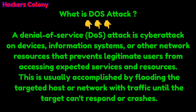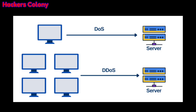DoS attack does the same thing on a targeted site — it floods with lots of traffic, the server gets crashed, and the site will be unable to respond. Here's a short diagram to understand the difference: in a DoS attack, a single system attacks a single server, whereas in a DDoS attack, lots of systems together attack a single server.